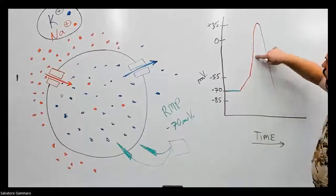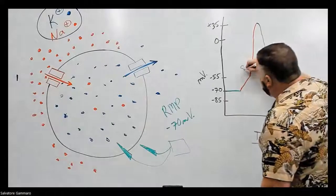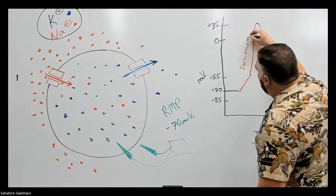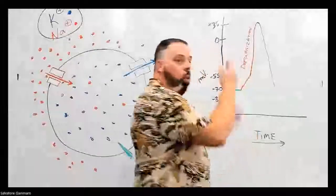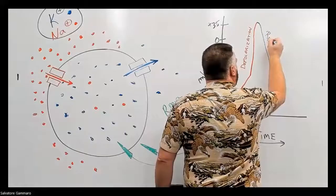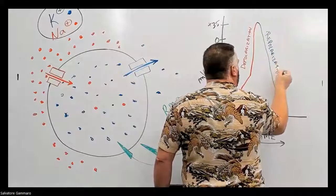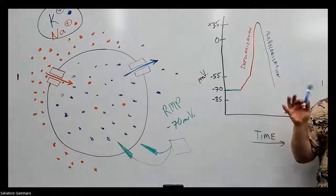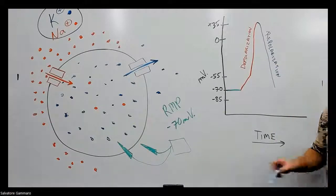When the graph goes up like this — when it goes more positive — we refer to that as depolarization. When it goes down, away from zero, we refer to that as repolarization. Is there a name for the top? Not really — we just say that's the peak.